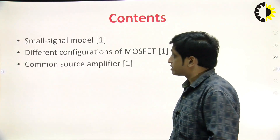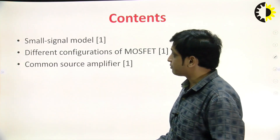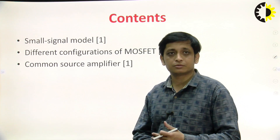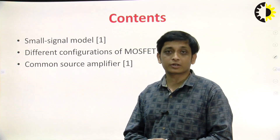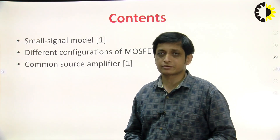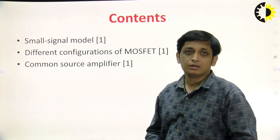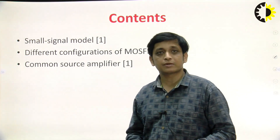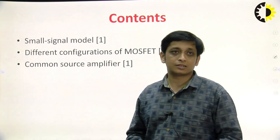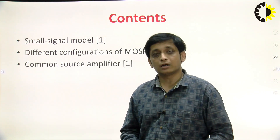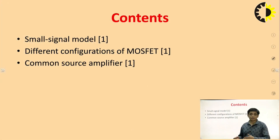In this class, I will start with the small signal model, because that is very important to understand the common source amplifier — to find out the input resistance, output resistance, and voltage gain of any amplifier. After that, we will briefly give an overview of the different configurations of MOSFET, then come to the common source amplifier circuit and find out these parameters using small signal modeling.